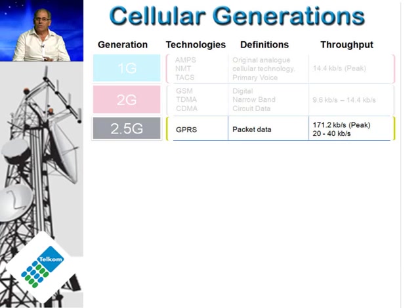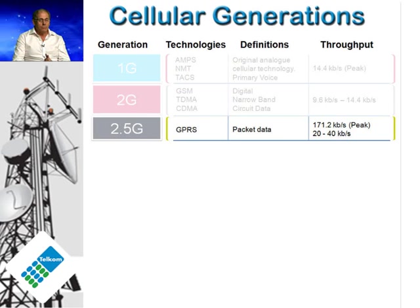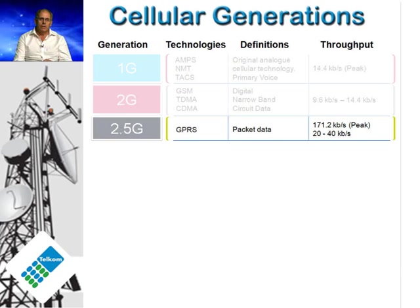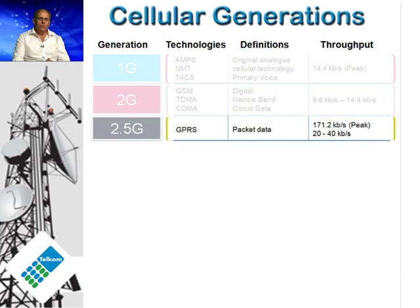With GPRS, we also saw the advent of IP, which stands for Internet Protocol. IP is a transmission protocol or a language that enables computers to communicate with each other, and which enables us, as end users, to use the Internet as we know it today. By the way, the Internet, or the World Wide Web, can be referred to as the largest computer network in the world today. So, before the introduction of GPRS, the available radio capacity or spectrum was used inefficiently to send voice and data.